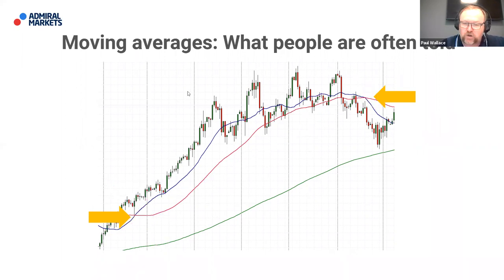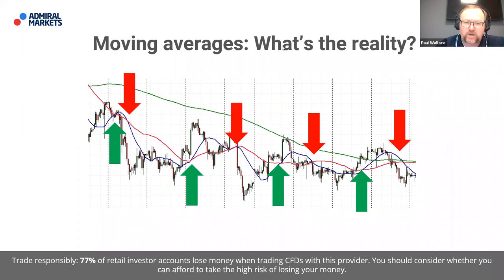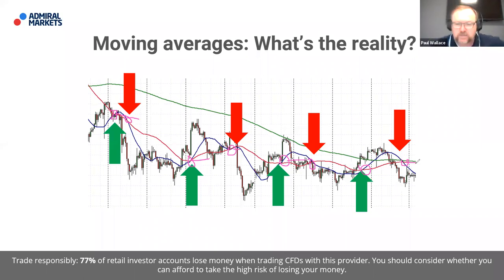Unfortunately it's not always that simple. The challenge is what can happen in a range-bound or consolidating market: you're buying here, selling here, buying here, selling here — whipsawing back and forth. All the profits made on the previous trending trade can get given back once the market goes into choppy sideways action. That is the downside of moving averages.